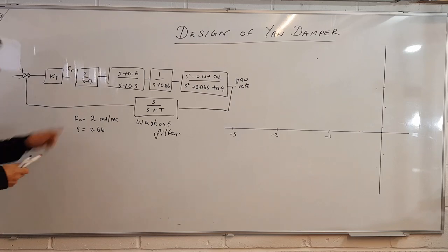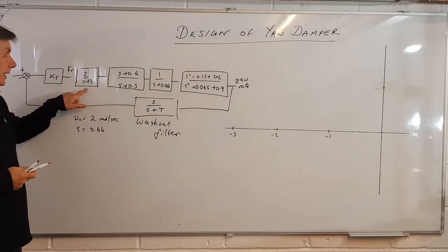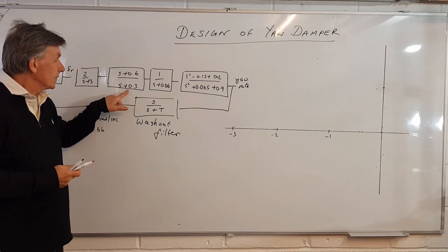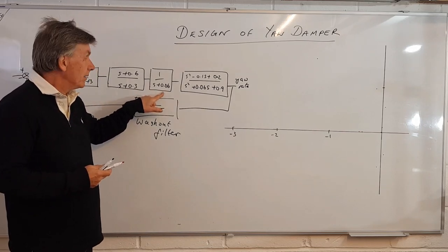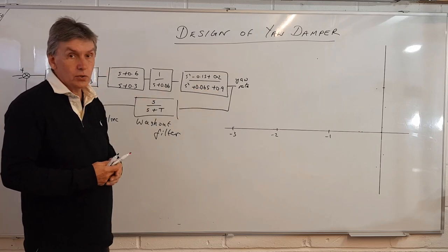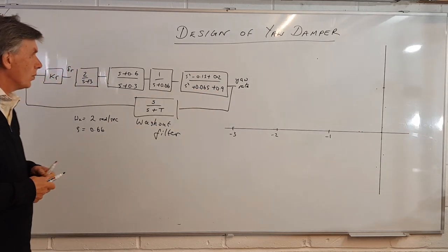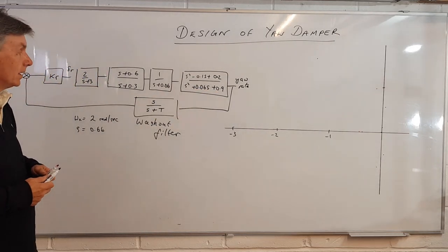In this transfer function, this part here is representing the actuator, this is representing the roll mode, this is representing the spiral mode, and this is representing the dutch roll mode.